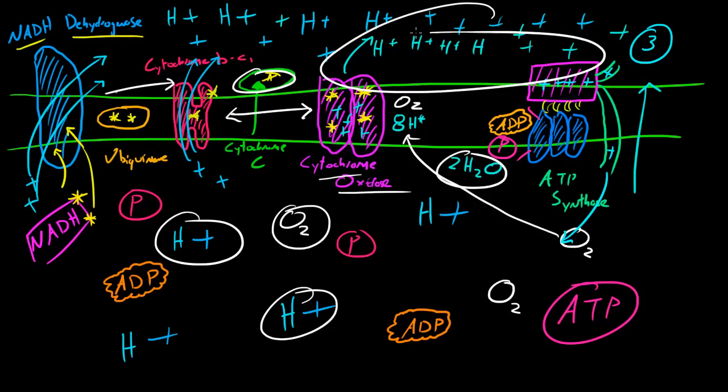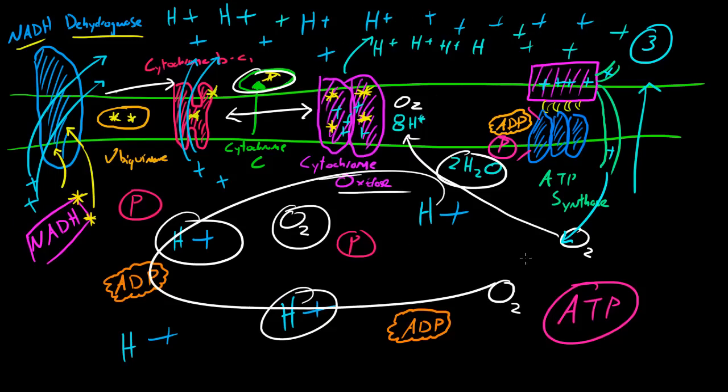So you may think this is a bad thing, but another molecule called ATP synthase is actually going to take advantage of this gradient. What it's going to do is it's going to be aware that whenever you have a gradient, there's energy that can be created.